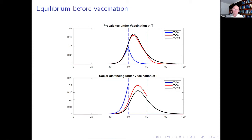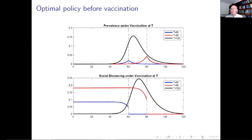We can also look at what the social planner would do in the same world — there are quite important differences. We are now in the process of extending this analysis to staged rollouts with multiple stages of vaccine rollout, imperfect vaccine protection, and the possibility of waning immunity. This is just to whet your appetite for the kind of things one can do in this kind of framework.